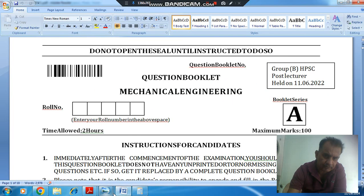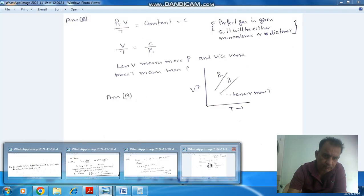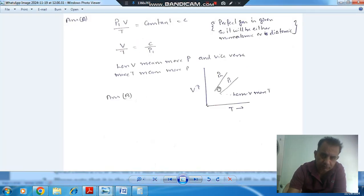So here, if we take, suppose this pressure P1V by T, then P1V by T is constant, so we can say V by T is equal to constant by P1.